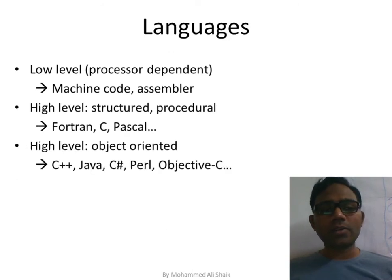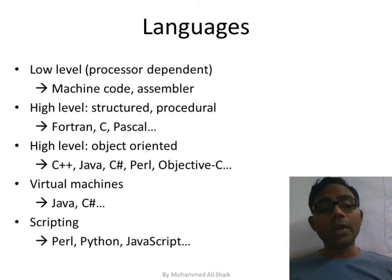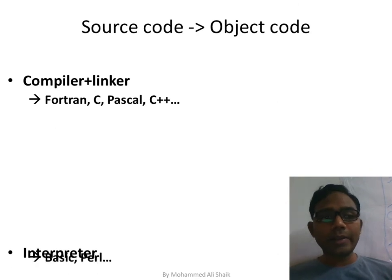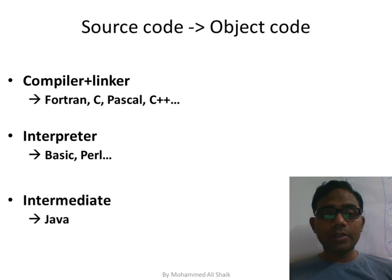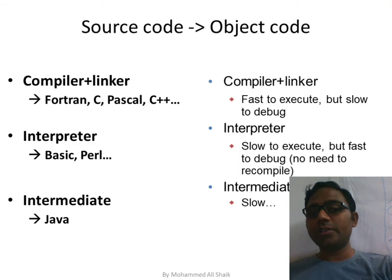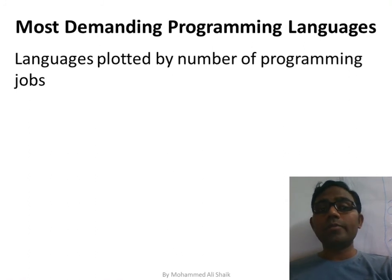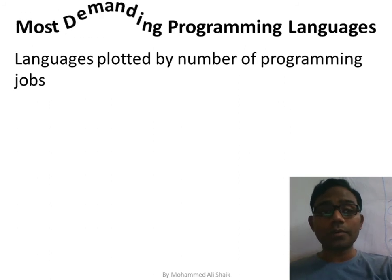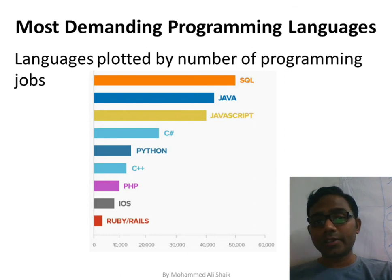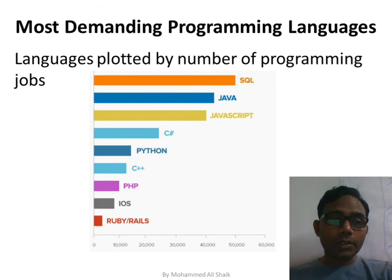Programming languages include low-level languages, high-level languages, object-oriented languages, virtual machine-based languages, and scripting languages. Fortran, C, Pascal, and C++ use compilers and linkers; BASIC and Perl use interpreters; Java uses both. Compilers give faster execution but slow debugging; interpreters are slow to execute but faster at debugging. The most in-demand languages for jobs are SQL, Java, JavaScript, C#, Python, C++, PHP, iOS, Ruby on Rails — but C is the foundation for all.